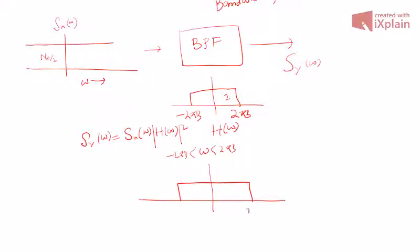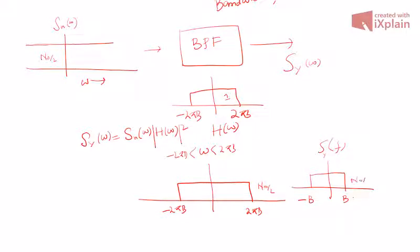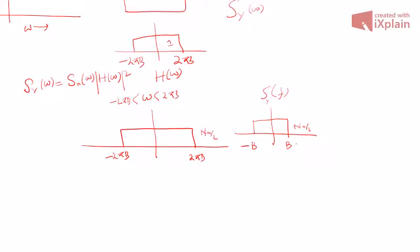So the output power spectral density looks like: on the frequency scale it spans from −B to B with height n₀/2. This is the band-pass model for Gaussian noise. The total power will be the area of this rectangle: (n₀/2) × 2B = n₀B. This is the reason for taking the height as n₀/2 — so that the total noise power comes out to the nice expression n₀ times B.